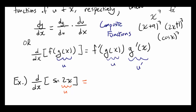Let's start by looking at this. You first need to find dy/du. This entire thing, sine of 2x, is y, and 2x is u. So what's going to be the derivative of sine of u? The derivative of sine of u is going to be cosine of u.